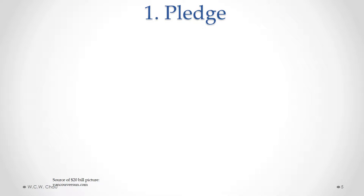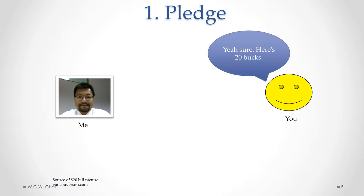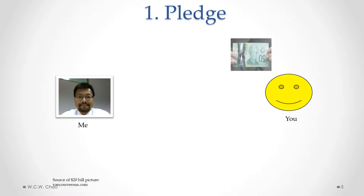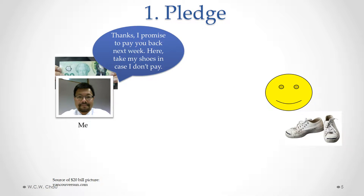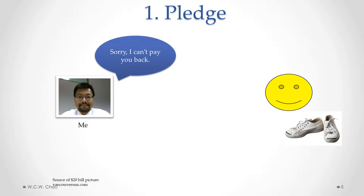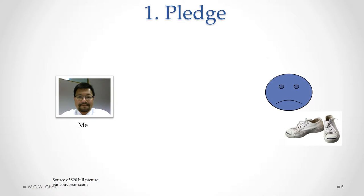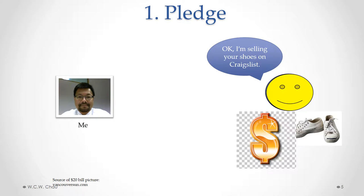The simplest form of security interest is called a pledge. Going back to our simple example with me needing some lunch money — may I borrow some money for lunch? You kindly say sure, here's 20 bucks. The $20 goes over to me, and I say thanks, I promise to pay you back next week. I take my shoes off my feet and hand them to you in case I don't pay. I use the money to buy lunch and eat it. Then next week I say sorry, I can't pay you back. So you sell my shoes on Craigslist, get money for them, and keep that money to pay off what I owe you.